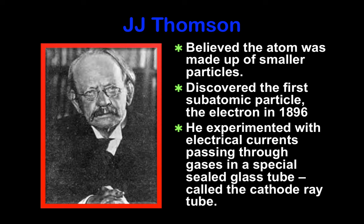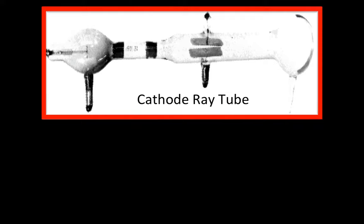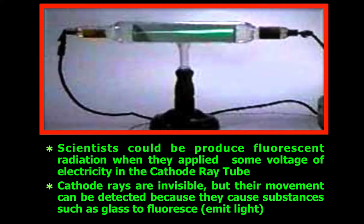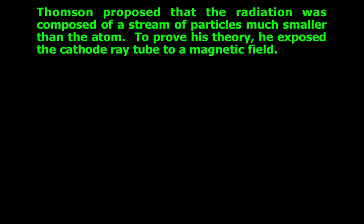This is a cathode ray tube. Scientists found that they could produce fluorescent radiation when they applied voltage of electricity in the cathode ray tube, but no one knew how it worked. The cathode rays are invisible, but their movement can be detected because they cause substances such as glass to fluoresce or emit light. Thomson proposed that the radiation was composed of a stream of particles much smaller than the atom.